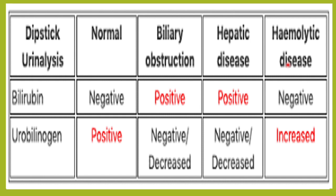In hemolytic disease, there is increased destruction of red blood cells, leading to increased production of bilirubin and increased urobilinogen formation in the intestine — so urobilinogen will be increased. However, urine bilirubin will be negative in hemolytic disease because the liver is still functioning normally, converting all unconjugated bilirubin to conjugated bilirubin and excreting it properly.